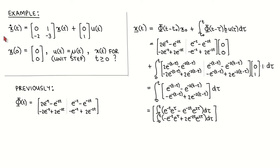Suppose the non-homogeneous state equation of a second-order system is given by x-dot equal to A times x plus B times u. This is the same example as in a previous video, except that the input is now non-zero. The initial states at time 0 are all zero, and the input to the system is a unit step, written as mu(t). Previously, we calculated the state transition matrix corresponding to this A matrix.